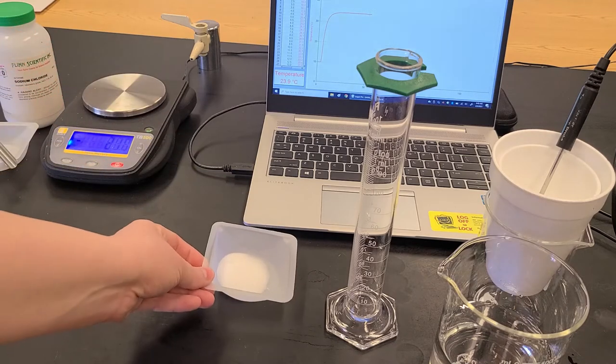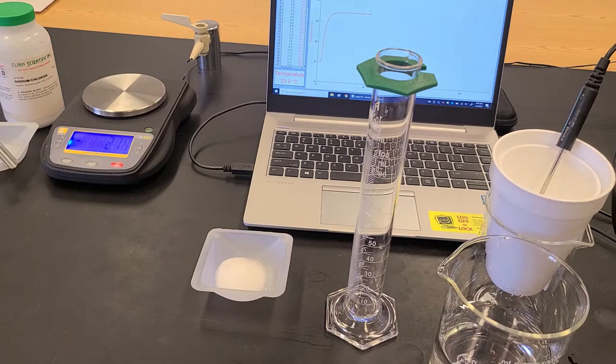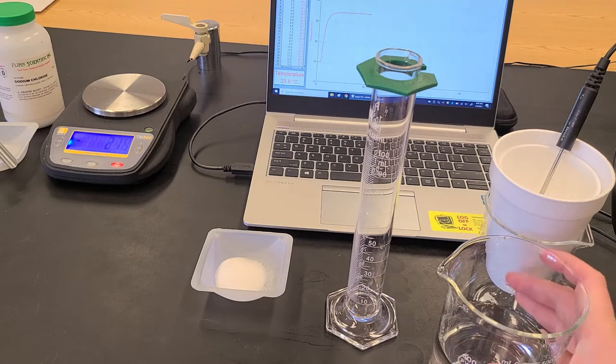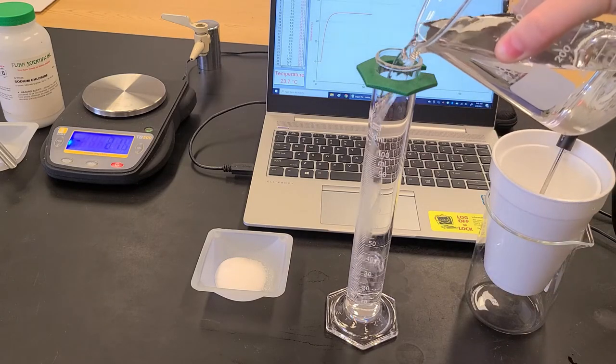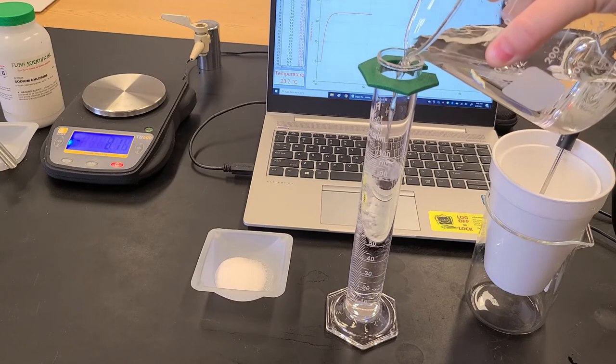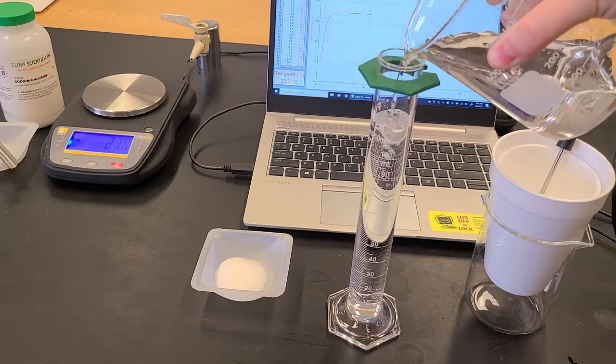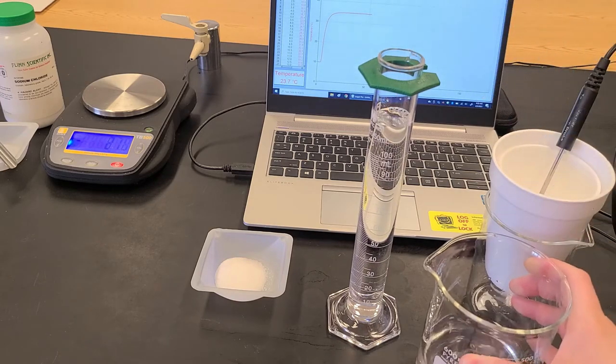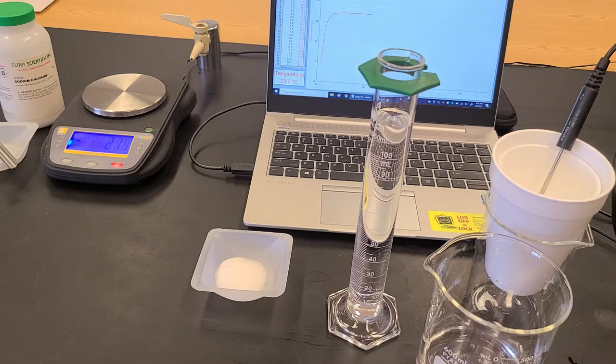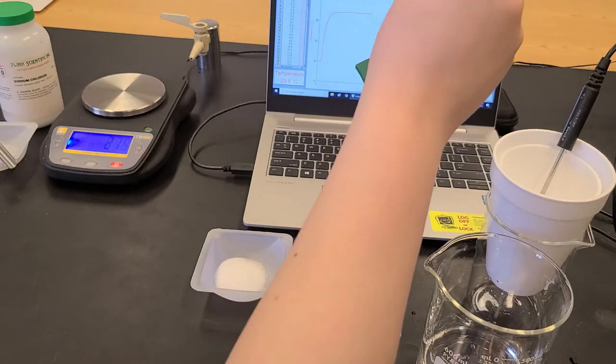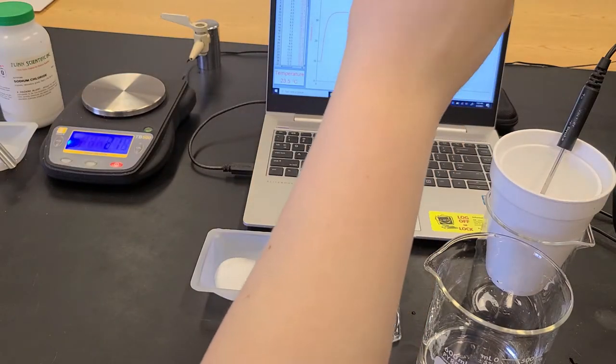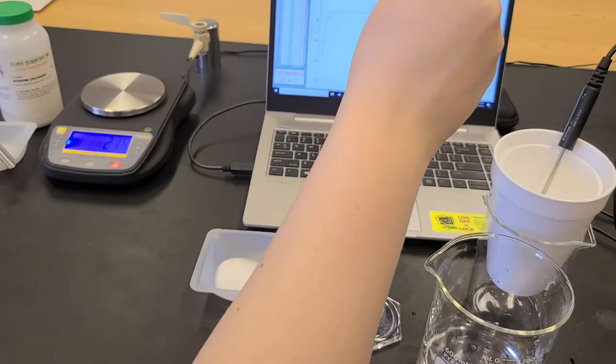And next I'm going to want to measure out some distilled water. So I think I used 100 milliliters here. In your experimental data it's 45 milliliters. But the idea is I need to know how much water, the starting temperature of the water, how much of my salt and the final temperature upon mixing. So here I'm just adjusting my volume to get it to 100 milliliters exactly.